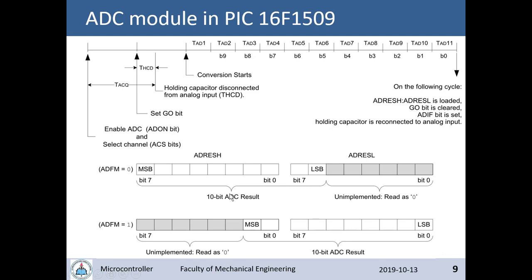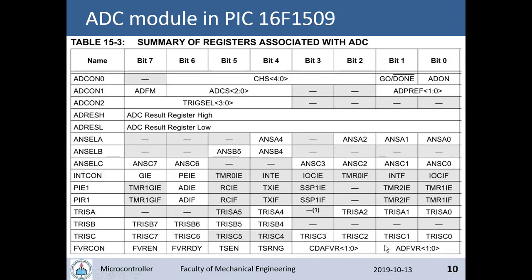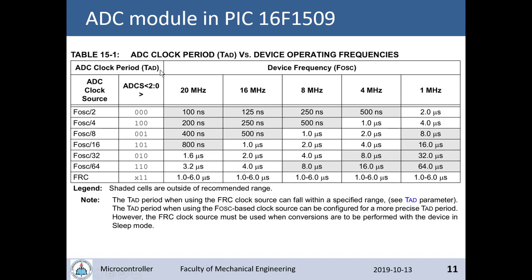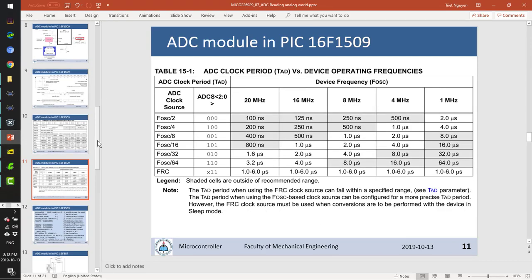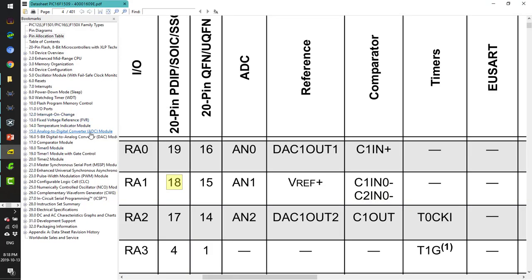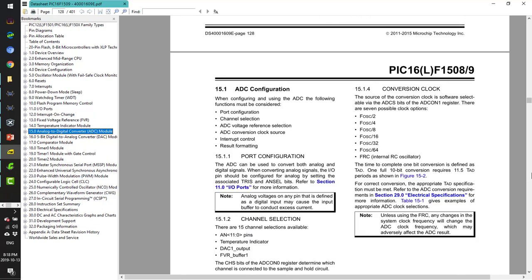There are two formats for storing the result — left-justified or right-justified. The key registers associated with the ADC are: ADC Control Register 0, 1, and 2, plus the analog select registers ANSELA, ANSELB, and ANSELC, which enable the pins connected to the ADC module. You can read the detailed meaning of every bit in these registers from the data sheet. For example, ADC Control Register 0 contains the CSS bits (4 to 0) for selecting the analog channel.